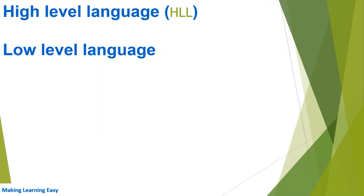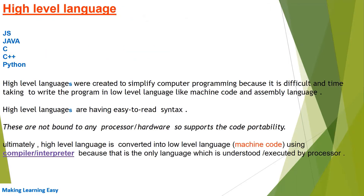Hello everyone, welcome to the session. In this session we will see what is high level language and low level language. I have mentioned here a few high level languages like JavaScript, Java, C, C++, Python, C#, and Fortran. These are the high level languages.